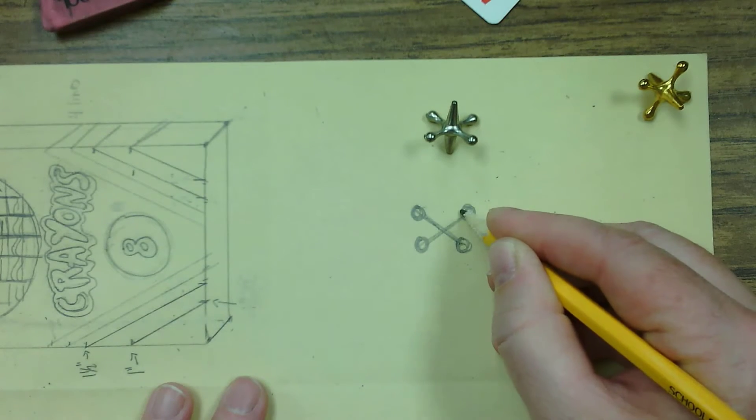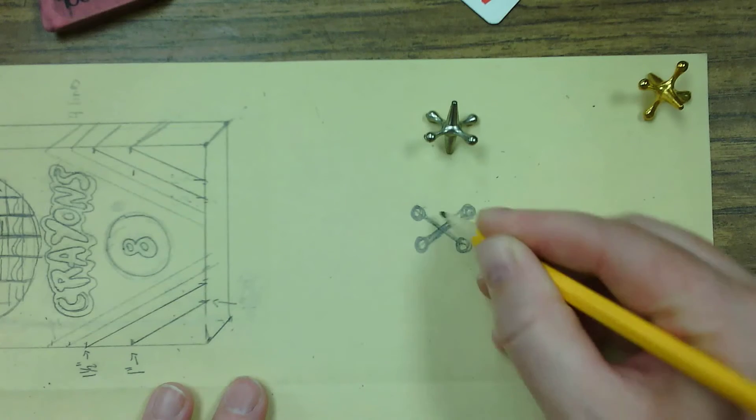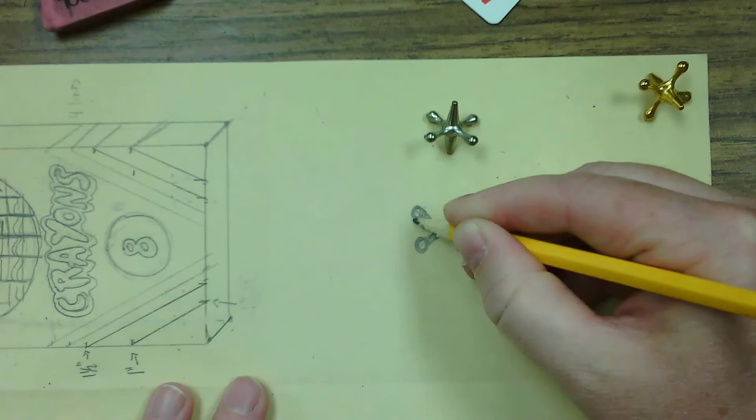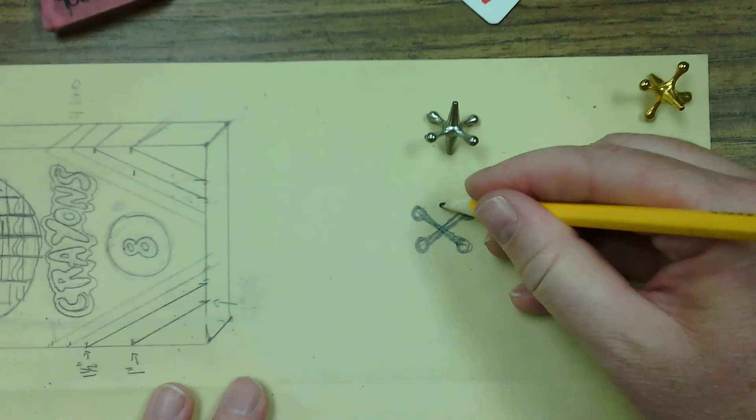Next, draw another line. We need to make the arms of the jack a little bit thicker. Just like so. I'm kind of curving them a little bit.